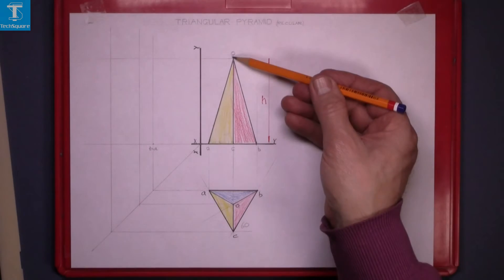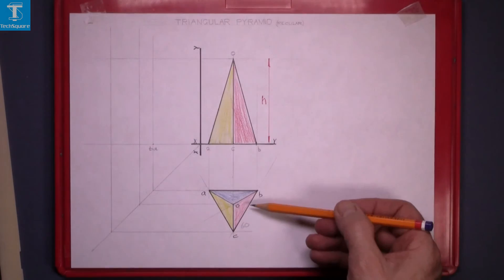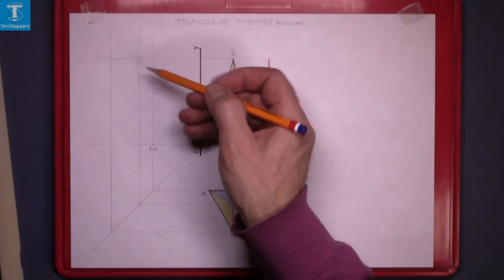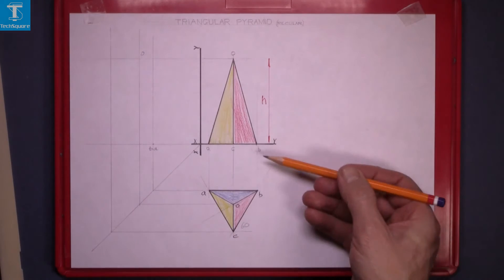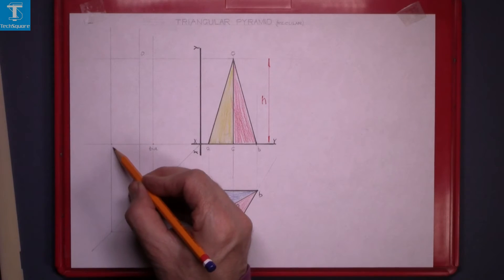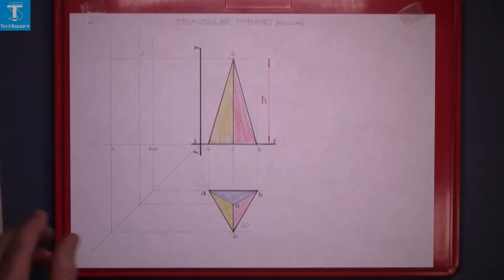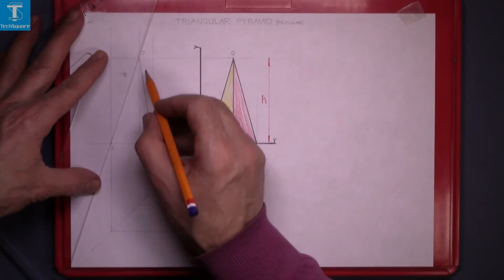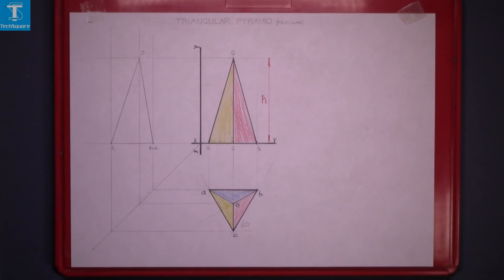The top point O, follow the point across and it's up there. And C is on the outside line at the bottom. And now join those points there. And that's the end view complete.